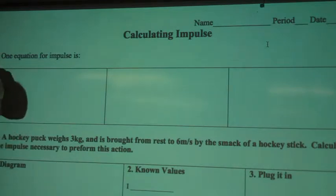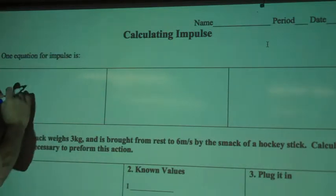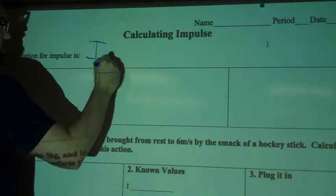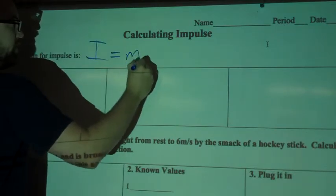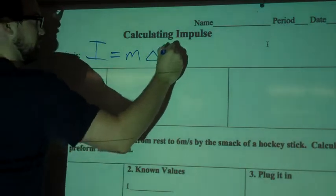So one equation for impulse—there are a few of them, but we're just going to look at one—is I equals M delta V.